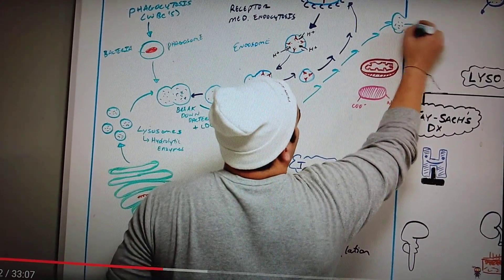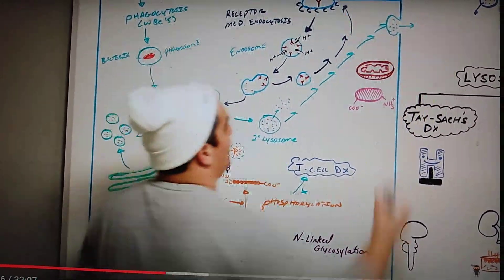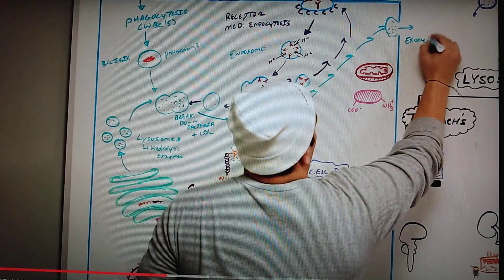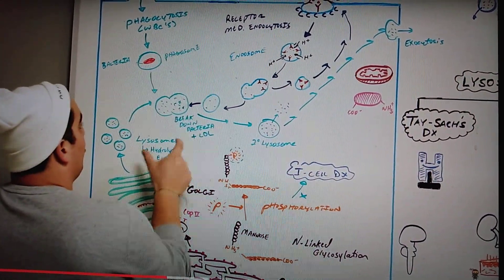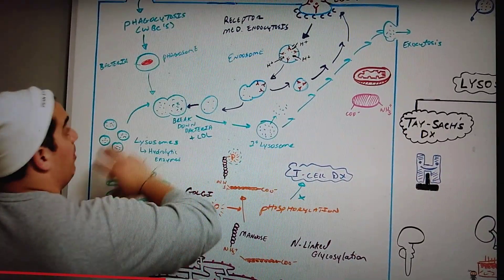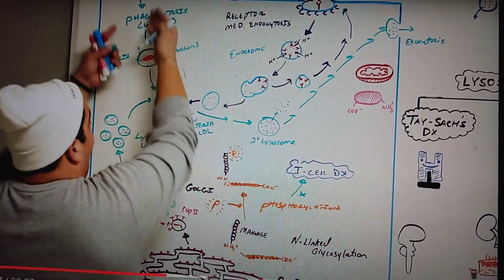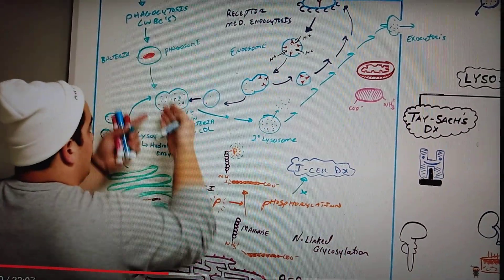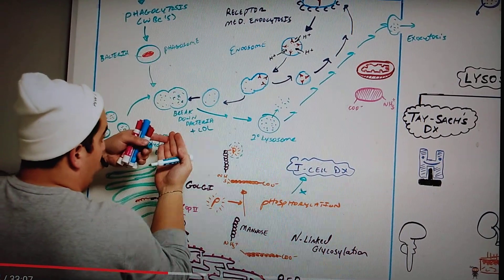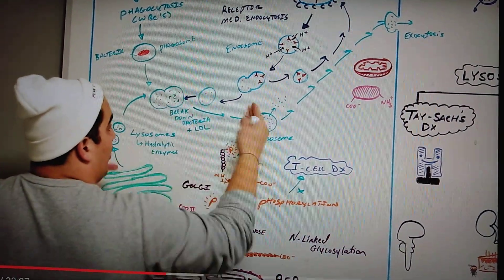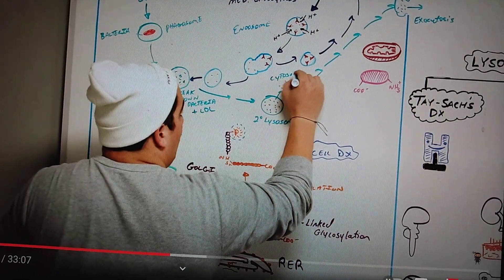So now you guys should understand with a quick recap. Lysosomes break down macromolecules within a bunch of different ways, right? Primarily via these hydrolytic enzymes. It can break down macromolecules for the process of phagocytosis, break down molecules from the process of receptor mediated endocytosis. After it breaks it down it can spit some of these molecules out into the cytosol or it can spit it out of the cell via exocytosis.